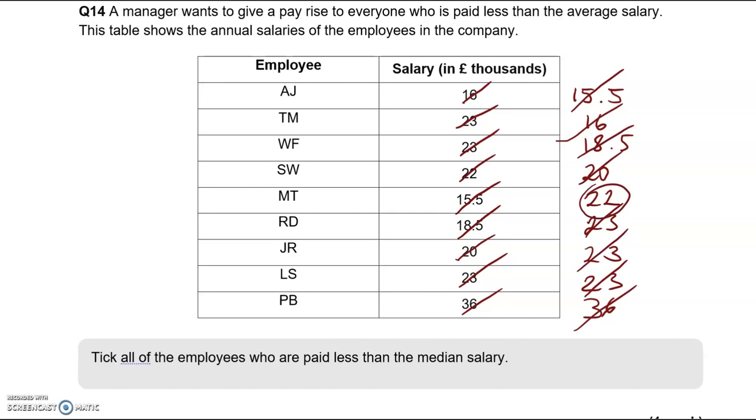So anything that is lower than 22 we're going to have to tick. We've got 16, 15.5, 18.5, and then 20. We can't include 22 because that is not lower than 22. So we've got AJ, MT, RD, and JR.